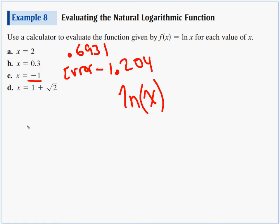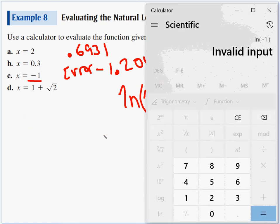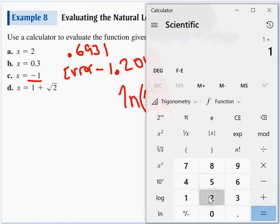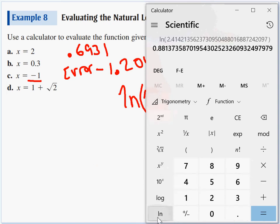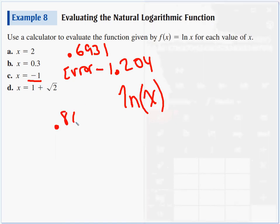And now for letter d, 1 plus root 2. I'm going to do 1 plus 2 square root equals. I got that. Now I'm going to natural log it. And I get 0.8814 for letter d. Just a little calculator button pushing.